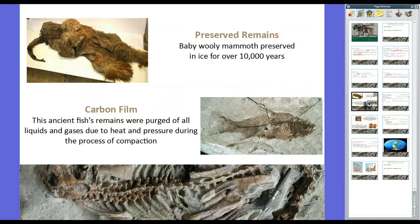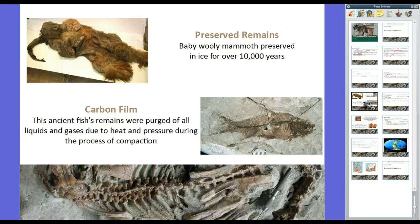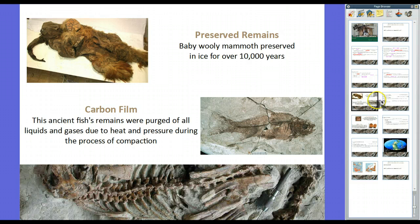So let's look at some types of fossils. First off, preserved remains. The most recent fossils we'll find are preserved remains. This woolly mammoth was found in Russia. It dates back to about 10,000 years. It was preserved in ice, and it was actually butchered by humans. They actually show marks of humans using knives to cut it and butcher it to take meat. This was the carcass that was left. It was thrown out in the ice, got buried by more ice, and was preserved. Here's an example of carbon film. The ancient fish's remains were purged of all liquids and gases due to the heat and pressure during the process of compaction.